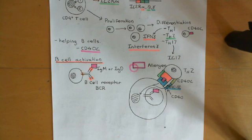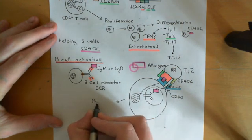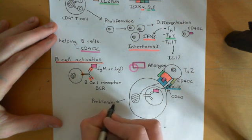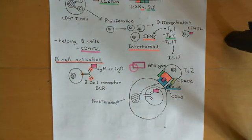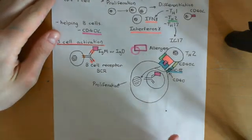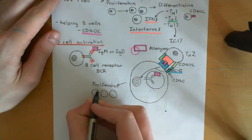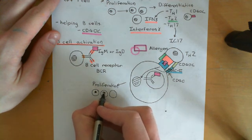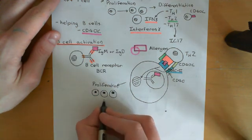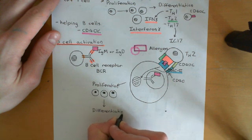Once the B-cell has received this stimulatory signal, it now is going to divide and divide and divide — proliferation follows. Another process called affinity maturation occurs, which we're not going to go through because it's quite complicated. To keep this simple, we're just going to say the B-cell proliferates and proliferates — it's a useful simplification, as we just want to know the core pathophysiology of asthma, not the details of immunology.